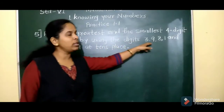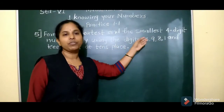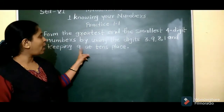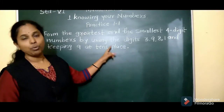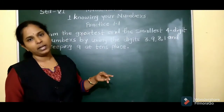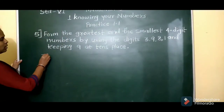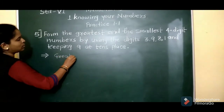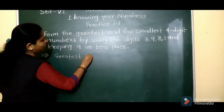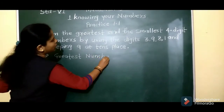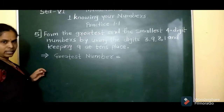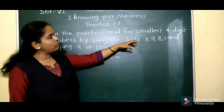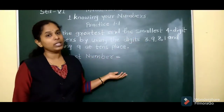They have given 4 digits and we have to make a 4-digit number, but the condition is that 9 must be kept at the tens place — both while writing the greatest number and the smallest number. First we will write the greatest number. While writing the greatest number, we have to arrange the given digits in descending order.